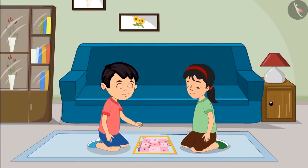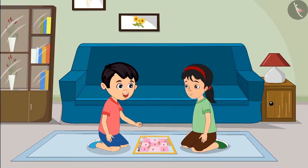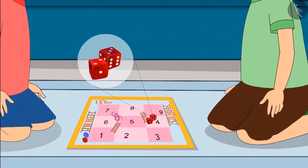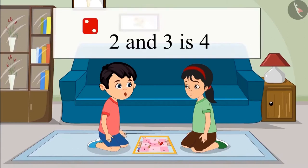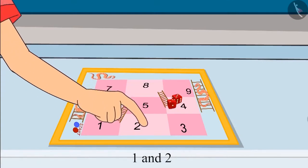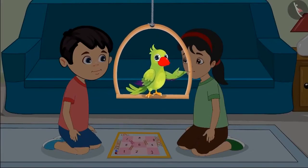May I roll the dice first? Sure — then add the numbers on both dice correctly and move your piece forward. Chotu rolls both dice: 2 is on one dice and 3 on the other. Chotu, what is the total when you add 2 and 3? Chotu says we get 4 — but this is incorrect. Chotu counted from 1 again: 1, 2 on the first dice, then 2, 3, 4. Do you think Chotu's method is correct?